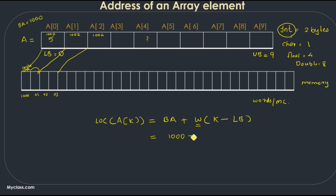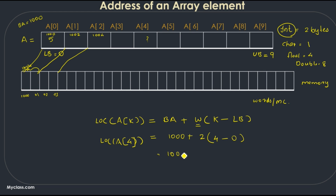Let's apply the equation. Our base address is 1000. For an integer array, w equals 2. Our k value is 4 for calculating the location of a[4]. So: 1000 plus 2 multiplied by (4 minus 0) equals 1000 plus 8, which is 1008. The address of element a[4] is 1008. This is the equation for calculating the address of a particular array element.